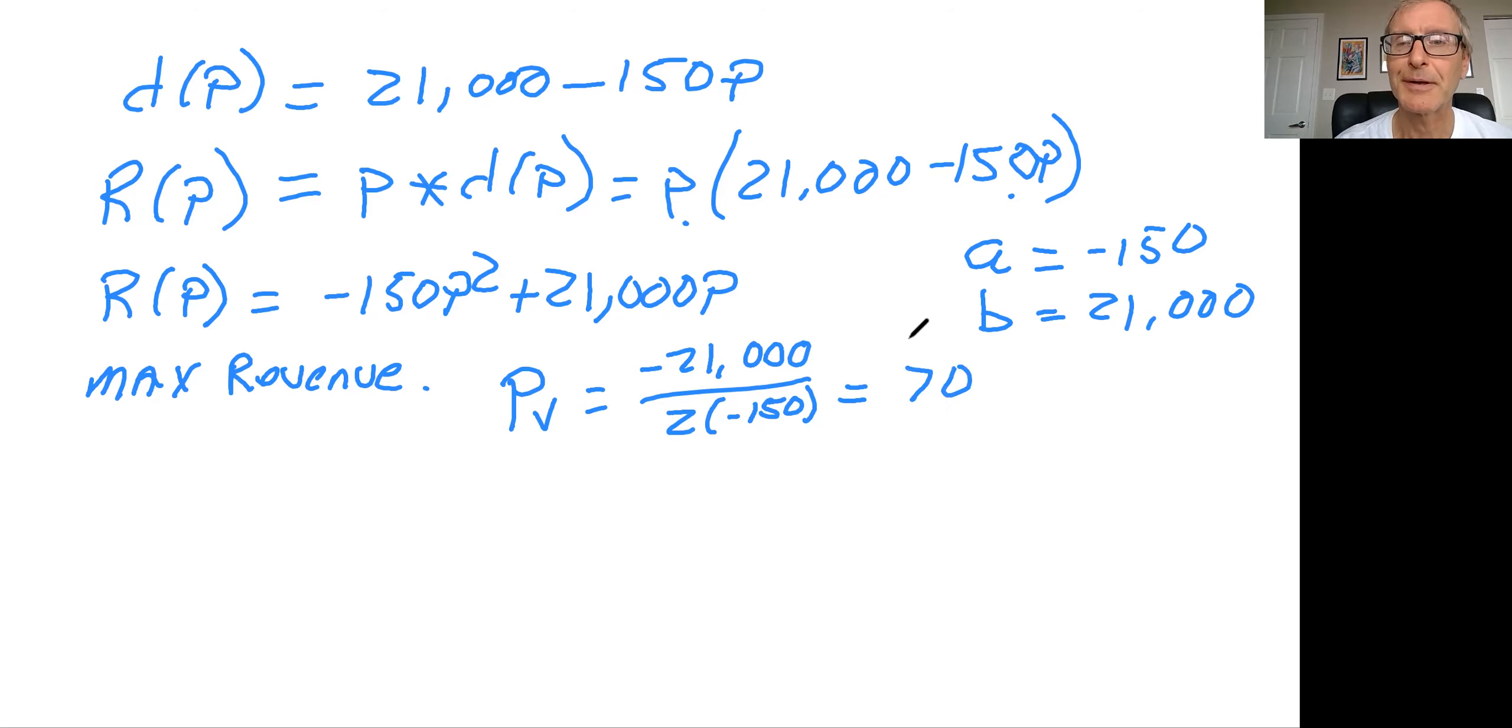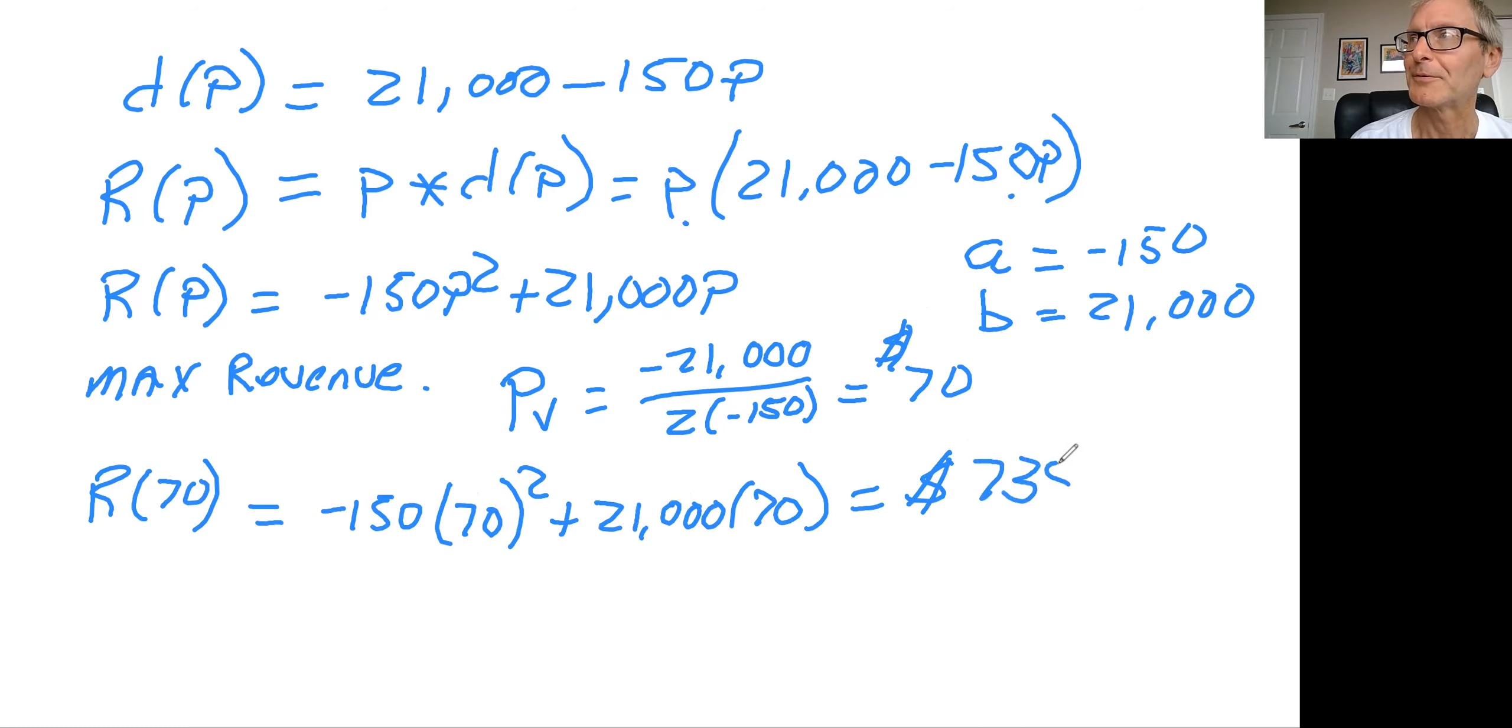And so if you did that calculation, you would see that you would get the number 70. So what that means is that to maximize your revenue, you would want to set the price at $70. So what is the maximum revenue? You have to get out your calculator to do this one. And so when you do that, you get minus 150 times 70 squared plus 21,000 times 70. And if you got out your calculator and did that, you would see that you would make $735,000 of revenue at that maximum with the price of the ticket of $70. And that would be the maximum revenue that you would like to do, given that the model that you have.